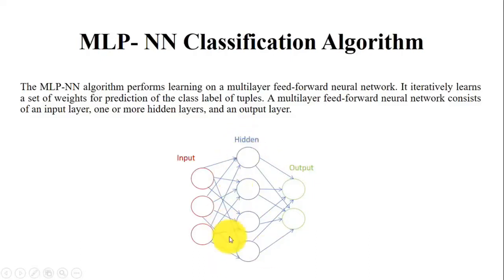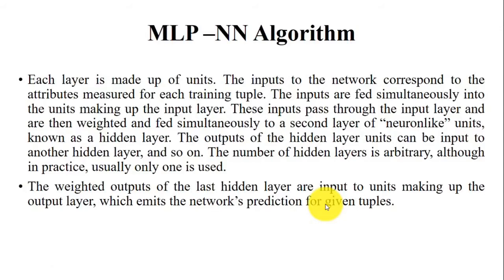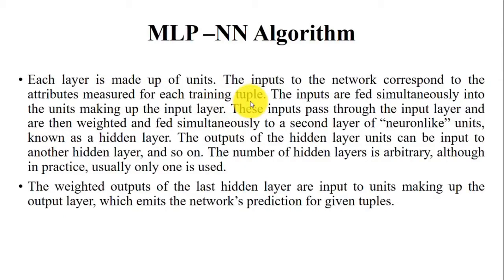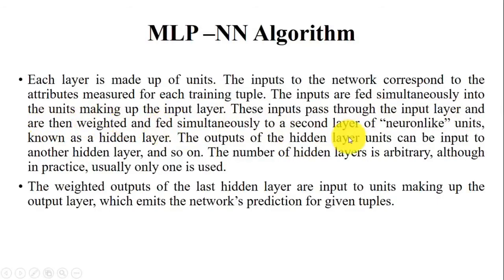The hidden layer corresponds simultaneously to the output layer, meaning the collective sum of the hidden layer is considered as an output. Each layer is made up of units; the units in the network correspond to attributes measured for each training tuple. Each training tuple is fed as input to the input layer, and those inputs pass through the input layer, then are weighted and fed simultaneously to the second layer of neuron-like units.